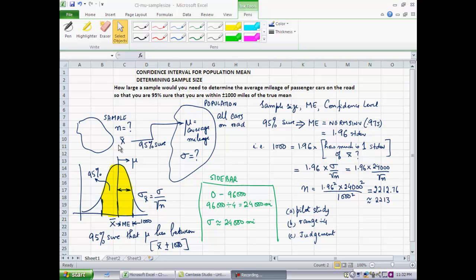Once I have the sample, I would determine the sample mean, which is the sample statistic to be used here. Based on the sample mean x bar, I would come up with a confidence interval for mu. I would end up with a statement like this: I am 95% sure that mu lies between x bar plus or minus 1000 miles.